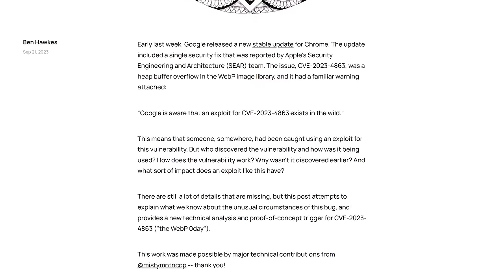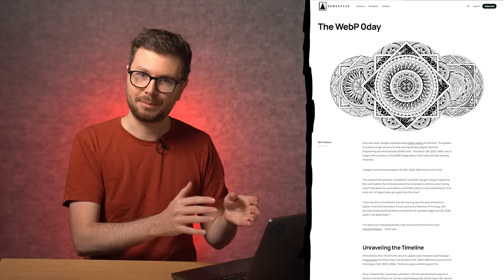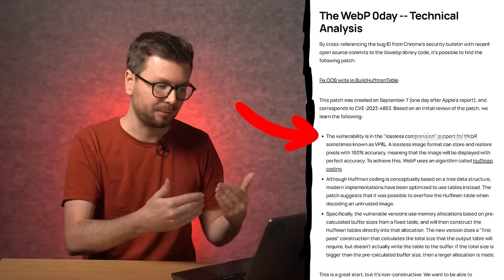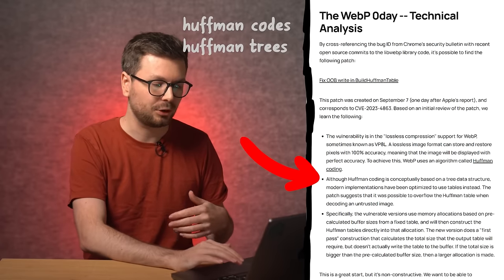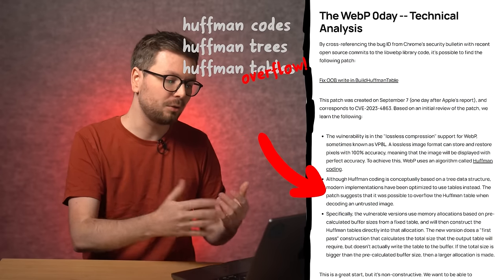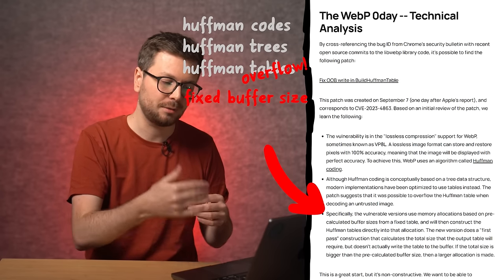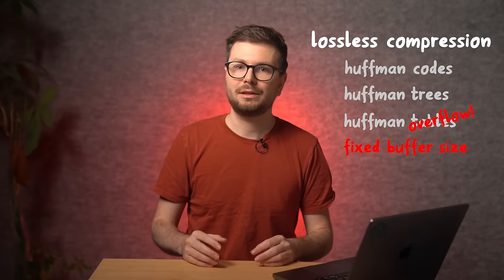This video is sponsored by our training platform Hextree.io, more on that later. Probably the best article written about this vulnerability is by Ben Hawkes and this was obviously also one of the main resources I started with. So let's see what he was able to learn from the public security patch. The vulnerability is in the lossless compression support for webp. To achieve this, webp used an algorithm called Huffman coding. Although Huffman coding is conceptually based on a tree data structure, modern implementations have been optimized to use tables instead. The patch suggests that it was possible to overflow the Huffman table when decoding an untrusted image.